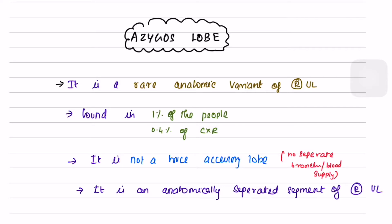Let's learn about Azygos lobe today. Azygos lobe is a rare anatomic variant of right upper lobe. It is found in 1% of the people and 0.4% of chest X-rays.